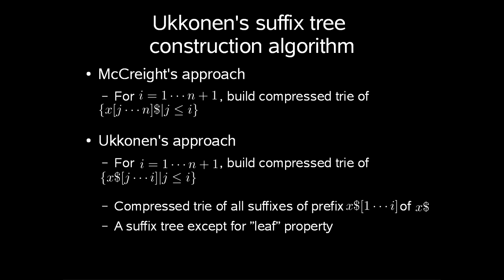Now Ukkonen's approach is to do the same, but for j up to i, and then build compressed trees of all suffixes of prefix x[1..i] of x$. This will give us a suffix-tree except for the leaf property.